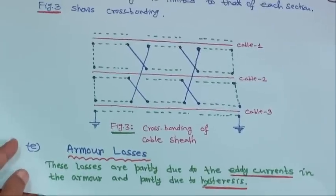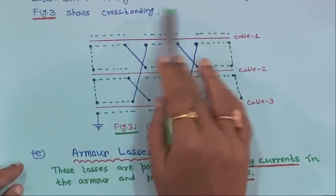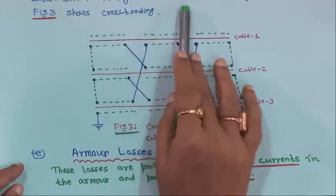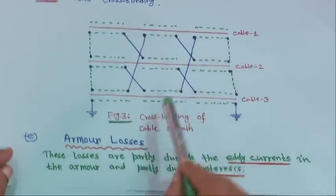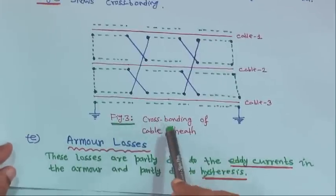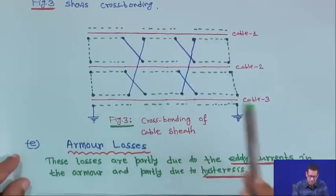This is the cross bonding diagram (figure 3) — the inter-sheath voltage is limited to that of each section. This is the cross bonding method.